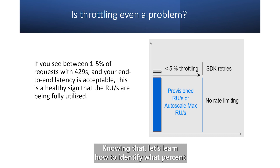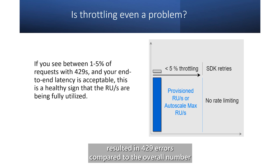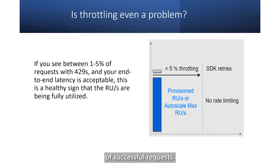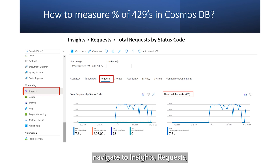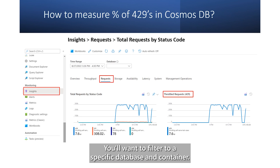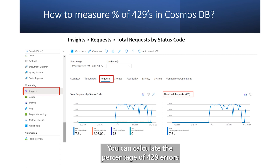Let's learn how to identify what percent of your requests to your database or container resulted in 429 errors, compared to the overall number of successful requests. From your Azure Cosmos database account blade, navigate to Insights, then Requests, and then Total Requests by Status Code. You'll want to filter to a specific database and container. Here, you can see your total requests and number of requests that returned 429. You can calculate the percentage of 429 errors from this data for your business justifiable duration.